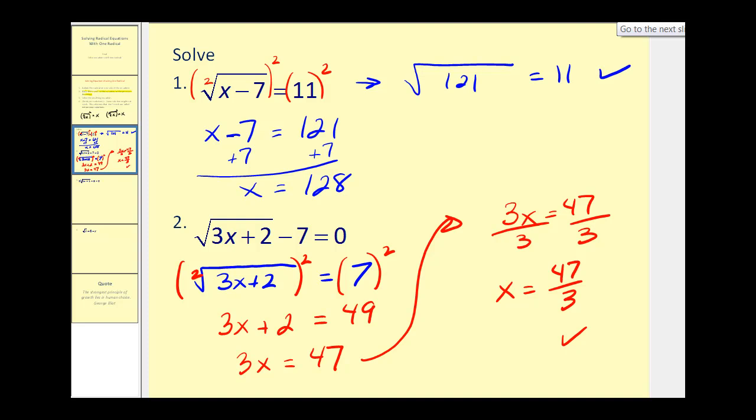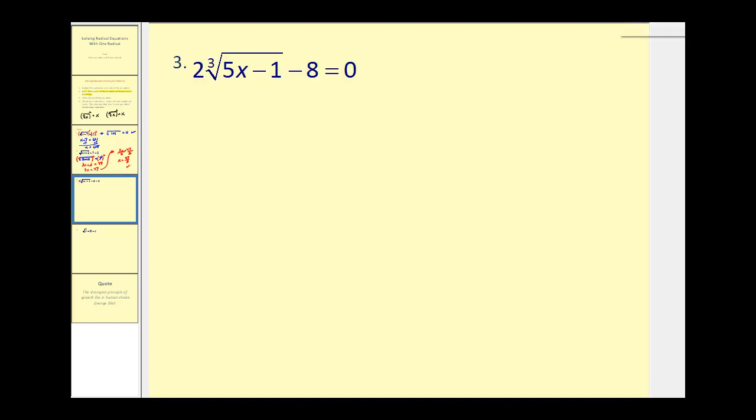Let's go ahead and try a couple more. Again, the first step here is to isolate the radical or in this case the cube root, so we should add eight to both sides. Next, this two is attached by multiplication, so we should divide both sides of the equation by two, so we have the cube root of five x minus one must equal four.